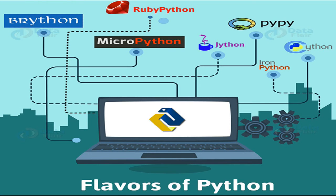Flavors of Python: CPython is the most widely accepted implementation of Python. It is written in C and is an interpreter. Jython is a Python implementation written in Java. A Jython program can import any Java class and compiles to Java bytecode. IronPython is implemented in C# and can function as an extensibility layer to application frameworks written in .NET languages.